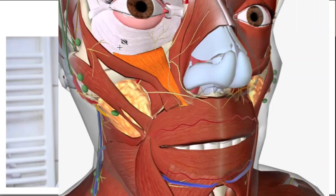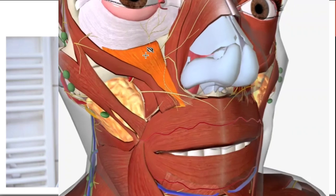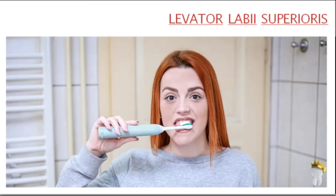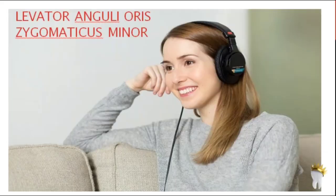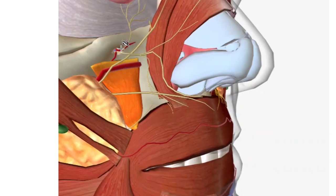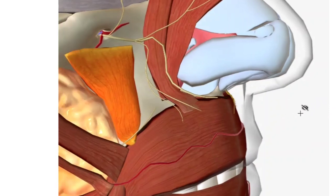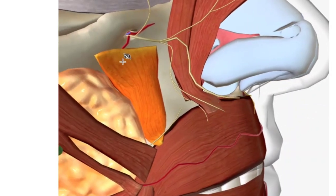Levator labii superioris lies lateral to levator labii superioris alaeque nasi. It originates from the maxilla and zygoma just inferior to the orbit, passes across the infraorbital foramen, and inserts into the upper lip, elevating it. Levator anguli oris lies deep to levator labii superioris, arising from the canine fossa of the maxilla below the infraorbital foramen, and inserts into the corner of the mouth.